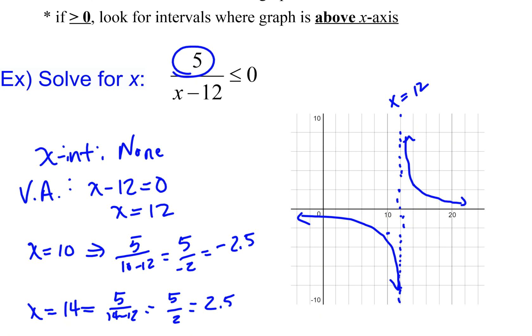So it's positive there. Then I go back and say, what am I looking for? I want this to be less than or equal to zero. It's never going to equal zero - we established there are no x-intercepts. So the best I can do is less than zero. On the left-hand side of the vertical asymptote, that's where I have the negative y-values. So my answer would be from negative infinity up to 12, and I don't include 12 because the function is undefined at that point.